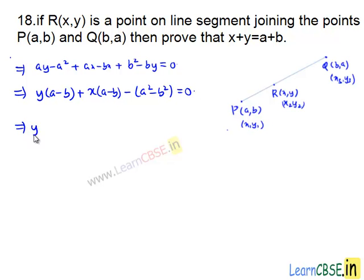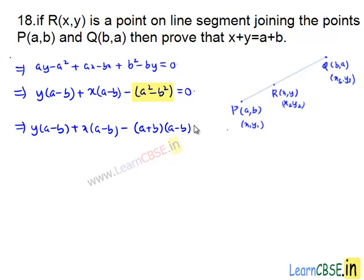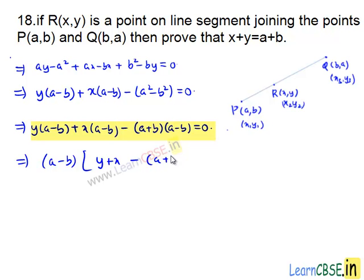This implies Y times (A minus B) plus X times (A minus B) minus (A squared minus B squared) equals zero. Taking (A minus B) common in all the terms, we get (A minus B) times (Y plus X minus (A plus B)) equals zero.